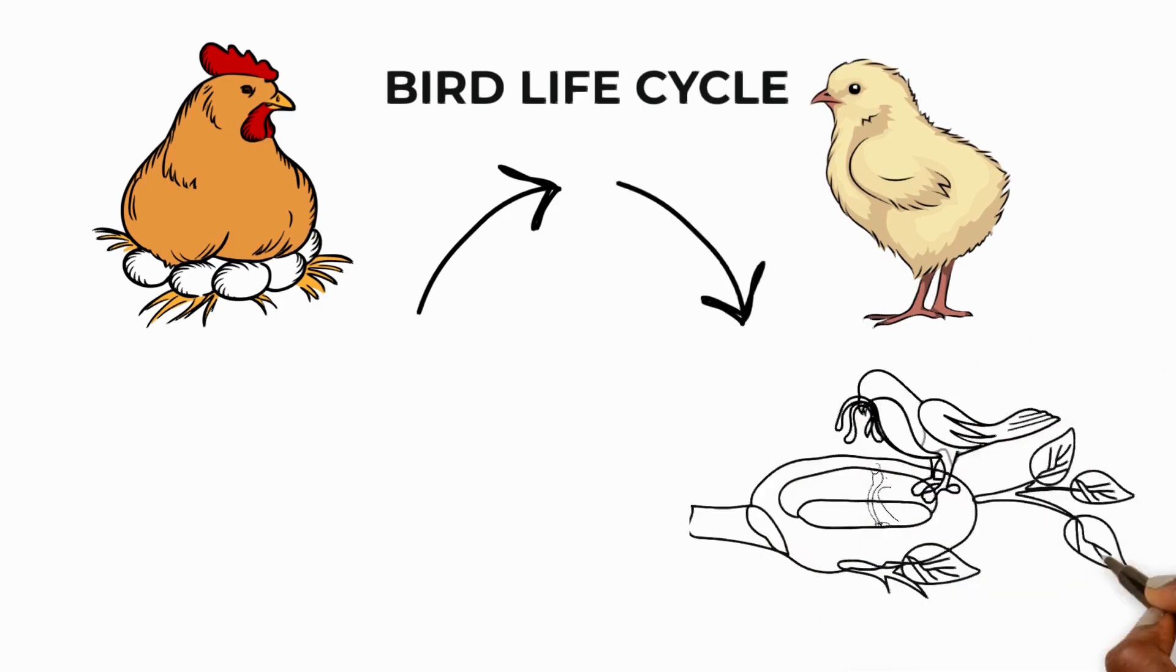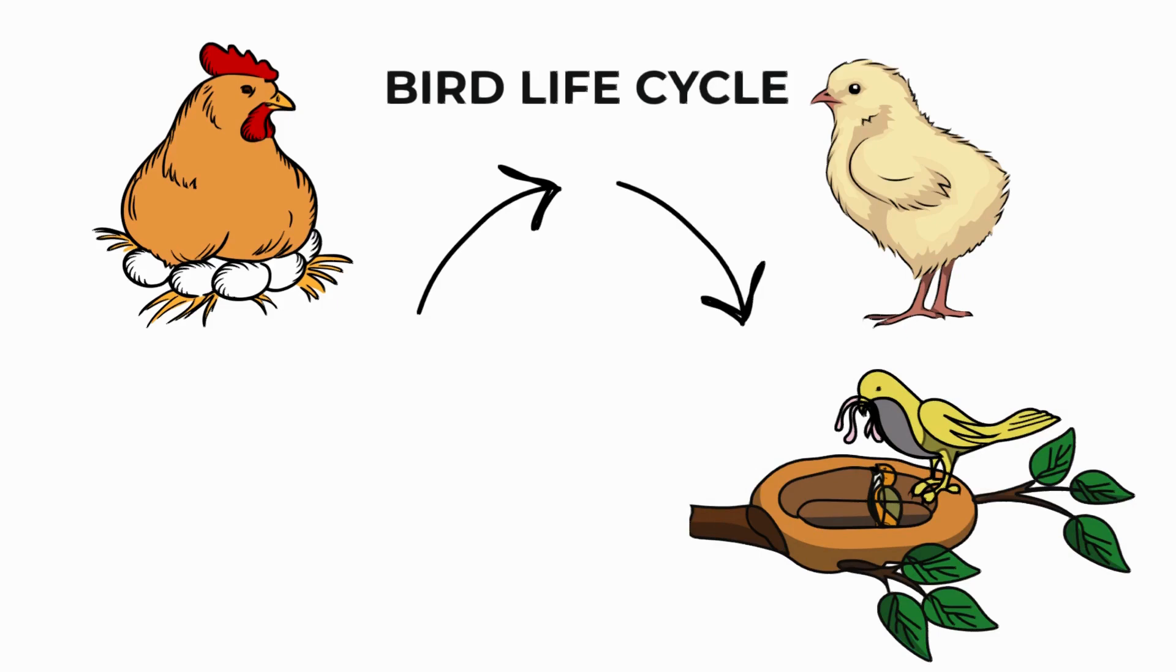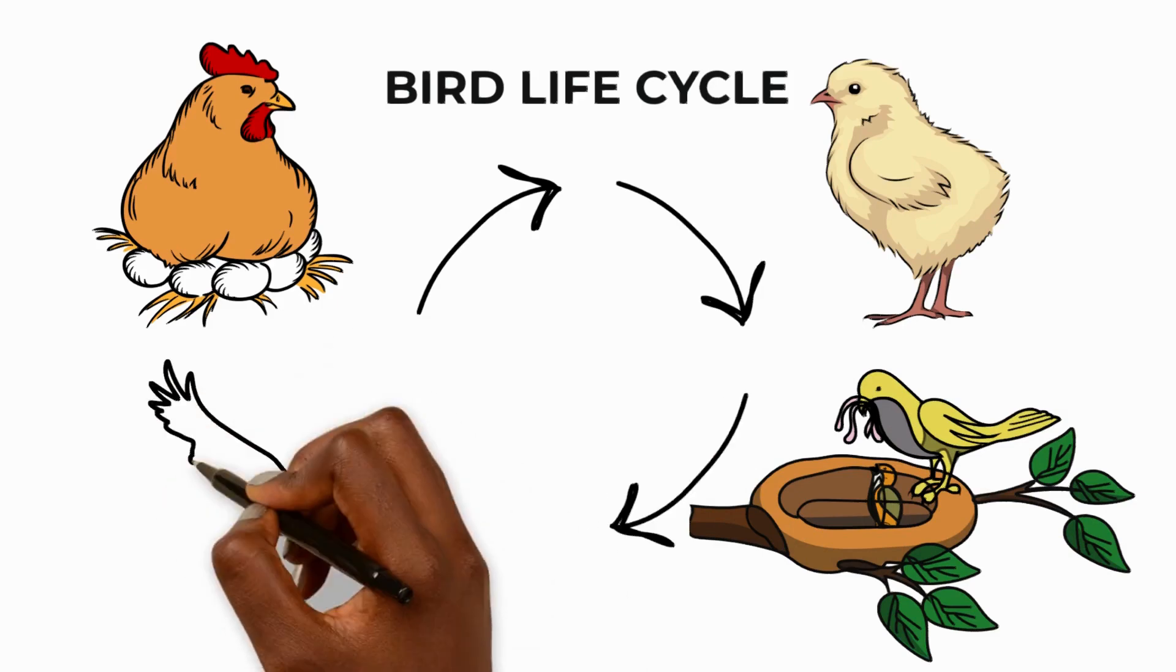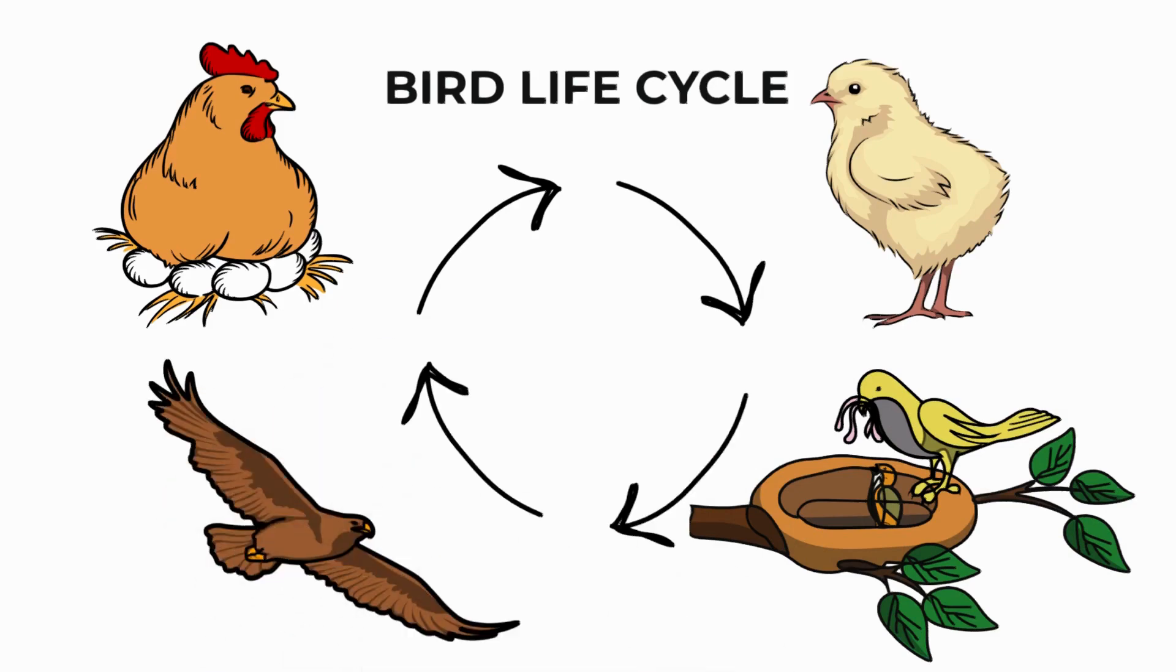A young bird is fed and protected by its parents until it's strong enough to fly. It's kept in a nest to protect it from predators. As the chick grows, it learns to fly and begins to explore its surroundings. Once it's fully grown, it becomes an adult bird, finds a mate and starts the whole cycle again.